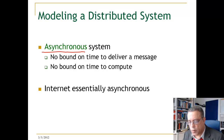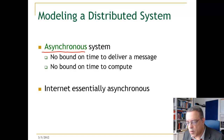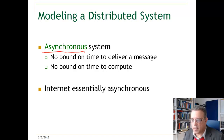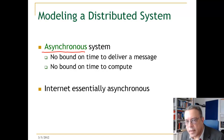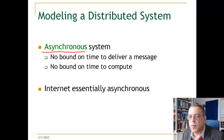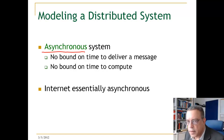The internet is an asynchronous system. If you have a distributed application consisting of several nodes communicating through the internet, we do not know a priori how long a message will take from one node to another. We have some idea about how long it normally takes, but there is no guarantee it will be within that bound. Sometimes when the internet is overloaded or the server is overloaded, these bounds are violated.